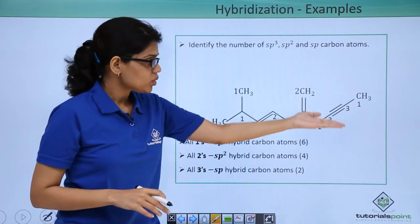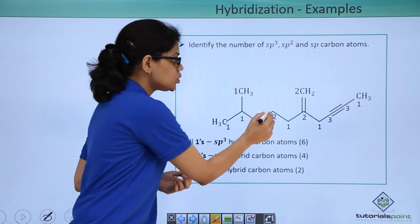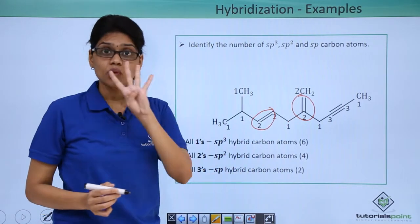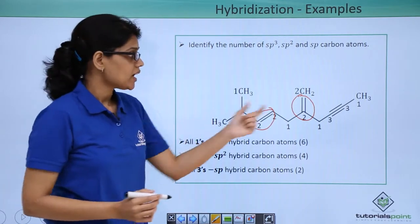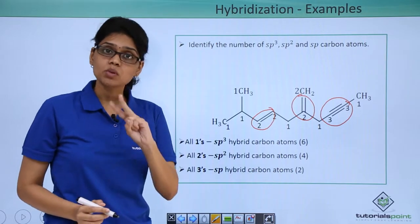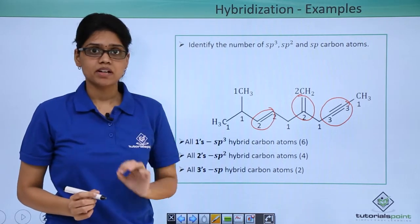So if we look at this we can see that there are 2 double bonds here. So obviously we have 4 carbon atoms which is sp2. And if we look at here we have 1 triple bond here which means you have 2 carbon atoms with sp hybridization.